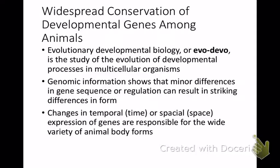These sorts of developmental characters are highly conserved among animals, and there's actually a discipline within biology called evolutionary developmental biology, or evo-devo, which is the study of the evolution of developmental processes. This makes use of both following development and looking at genetic and genomic information to determine how animals can have such striking differences in their form. This is often controlled by changes in when and where these genes are expressed.